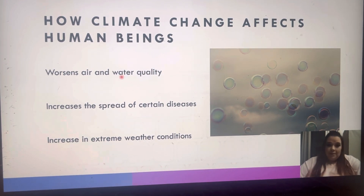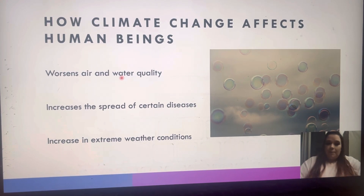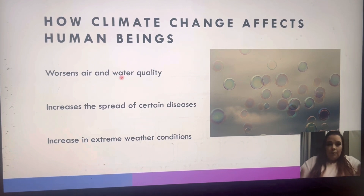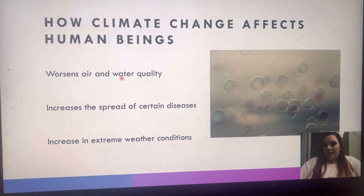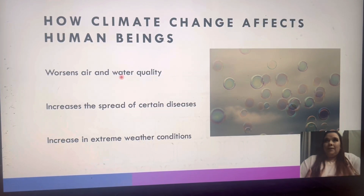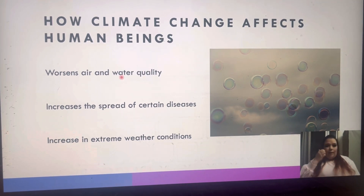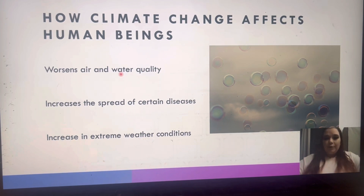Everything in general seeks balance. Whenever you disrupt that balance, one way or another, it's going to seek to find some type of equilibrium — we can see that in our own lives, in nature, in the way things grow or die. So keep that in mind whenever you think about climate change, because the things that we do are ultimately going to come back at us in a different way. That's kind of the basis around climate, and as we get more into it, you'll understand a little bit more.